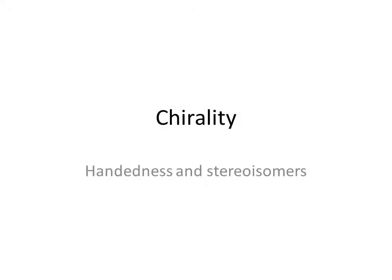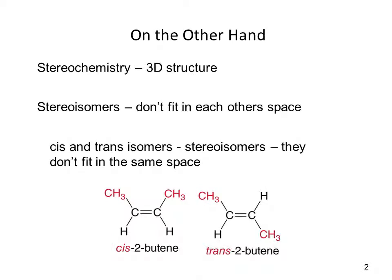Some organic molecules are what we call chiral. This means they are handed like a left hand or a right hand, and the two molecules — either the left-handed one or the right-handed one — are called stereoisomers. We're going to go into something called stereochemistry, which is the three-dimensional structure and how molecules differ from each other in three-dimensional space.